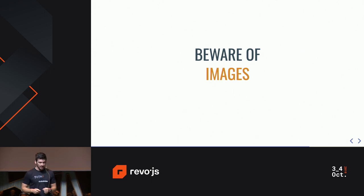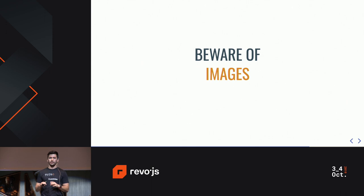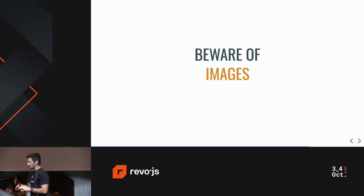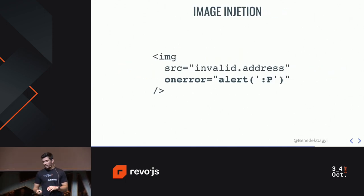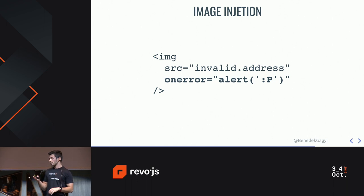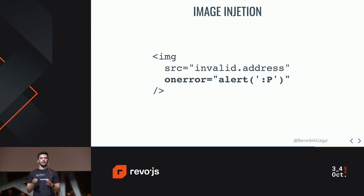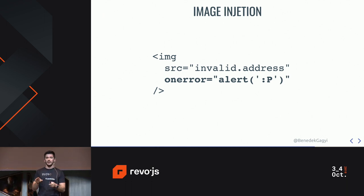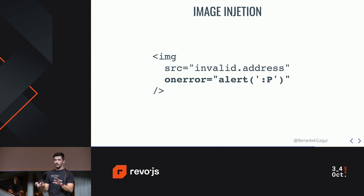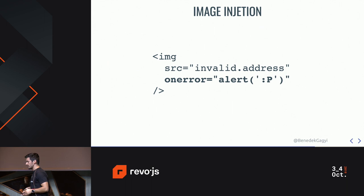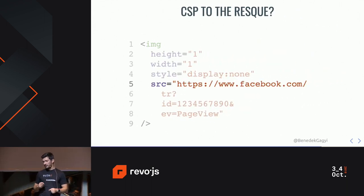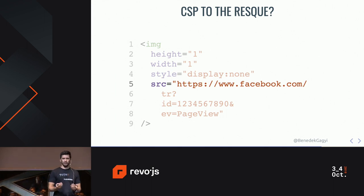Last but not least, as a general idea — beware of images. And I don't only mean really bad memes on 9gag; beware of uploading images and stuff like that on your site, because it's really easy to get it wrong. We've seen this example a few times already: an image with an invalid source and an onerror attribute that contains a malicious script. This is kind of easy to avoid if you only let your users upload the source part and not anything else.